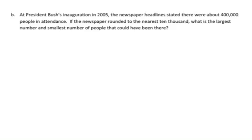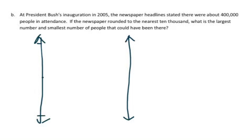The next number problem I'm going to do reads, at President Bush's inauguration in 2005, the newspaper headline stated that there were about 400,000 people in attendance. If the newspaper rounded to the nearest 10,000, what is the largest number and smallest number of people that could have been there? So to do this problem, I'm going to use the vertical number line.